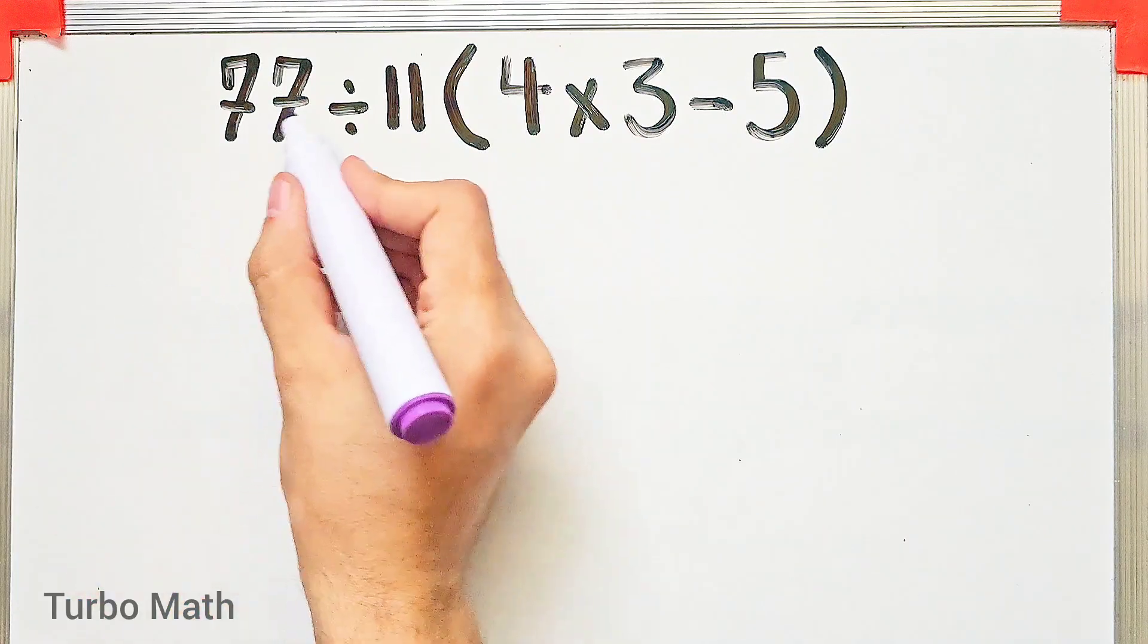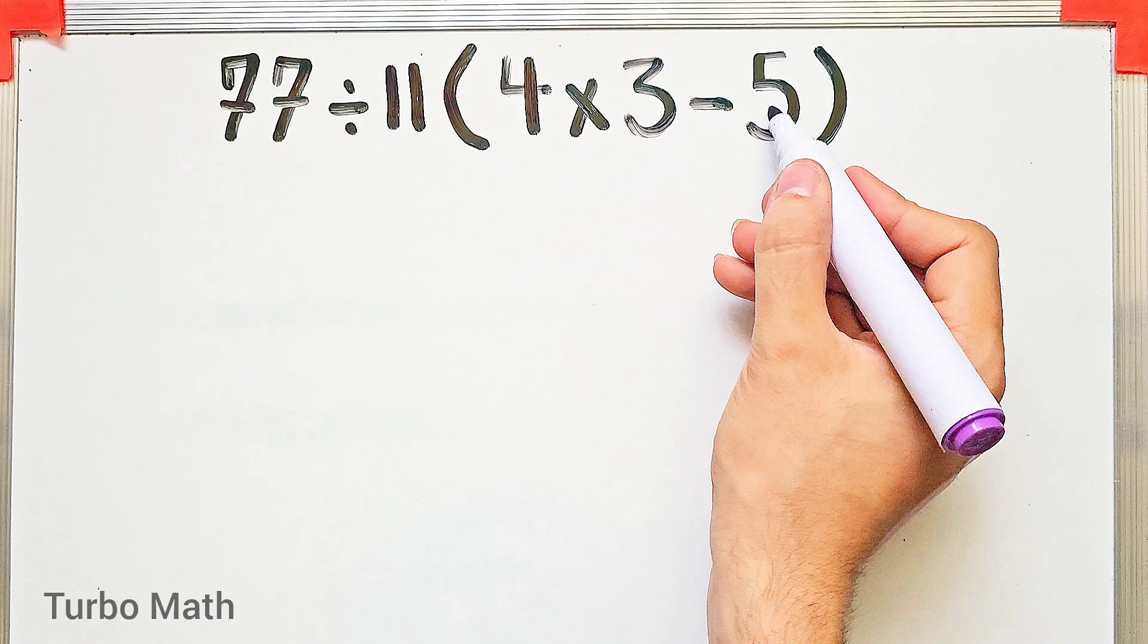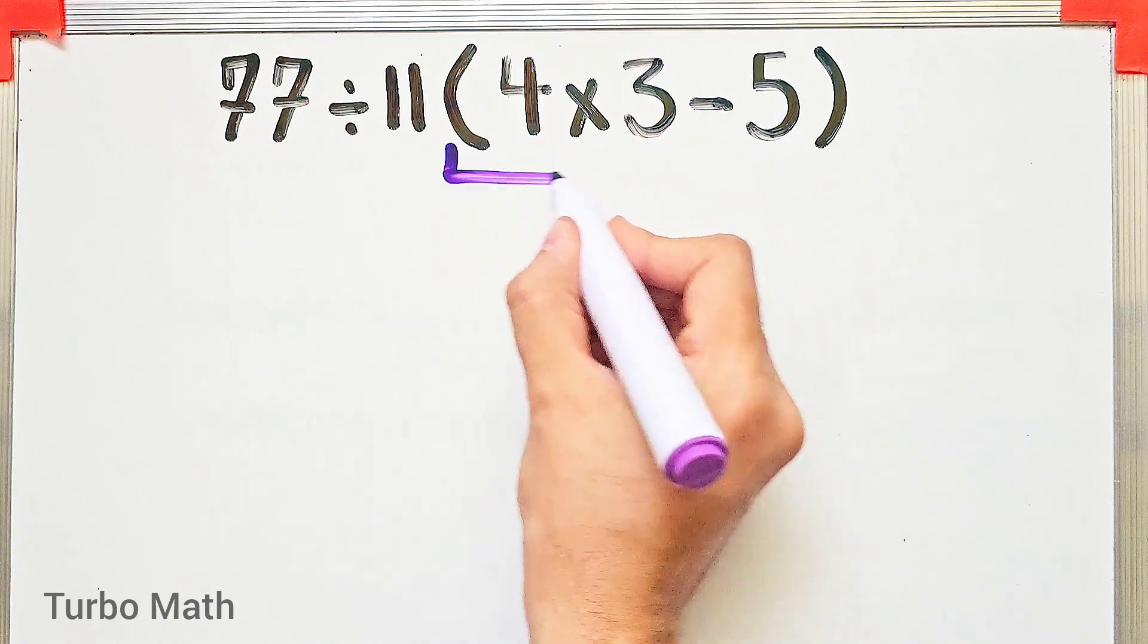Hi friends, welcome to Turbo Math channel. 77 divided by 11, then times 4 times 3 minus 5 in the parentheses.